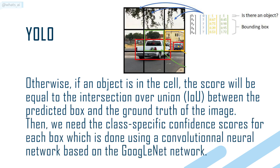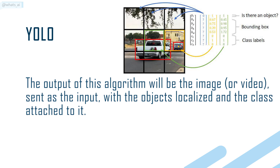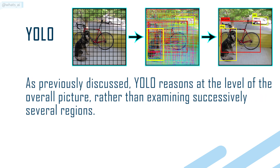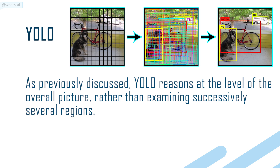Then we need the class-specific confidence scores for each box, which is done using a convolutional neural network based on the GoogLeNet architecture. The output of this algorithm will be the image or video sent as input, with the objects localized and the class attached to each one.